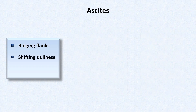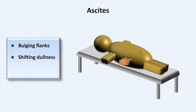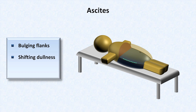Another finding is called shifting dullness. Imagine percussing along the abdomen from the midline outward — it starts off sounding very resonant, and then suddenly there's a transition point where it begins to sound dull. Inside the patient's abdomen, all of the fluid, which moves freely under the effect of gravity, settles to the bottom. What looks like empty space on top is where the air-filled bowels literally float. Thus, percussion above the transition point sounds resonant and below sounds dull.